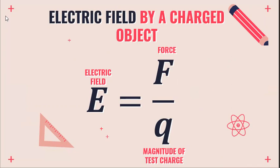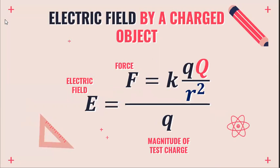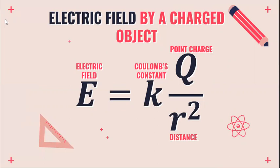Electric field is the imaginary field that surrounds a charge or a point charge. We can calculate the electric field of a charge using our electrical force per unit magnitude of test charge. The unit for electric field is in terms of newton per coulomb. Deriving another equation for electric field using Coulomb's law, we substitute the value of Coulomb's law — K Q1 Q2 over R squared — over Q. The test charge cancels, leaving an equation for electric field: Coulomb's constant multiplied by the magnitude of the point charge over the distance between them squared.